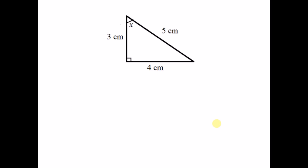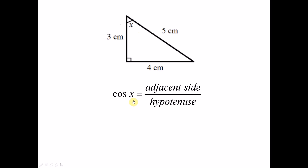Before we start, we do a very quick revision. Here you have a right angle triangle and you are given the length of all three sides. In the previous video we already learned how to find the sine, cosine, and tangent of a given angle in the right angle triangle. For example, if you want to find cosine x, you use adjacent side divided by hypotenuse. The adjacent side of this angle is 3 and the hypotenuse is 5, so you take 3 over 5.